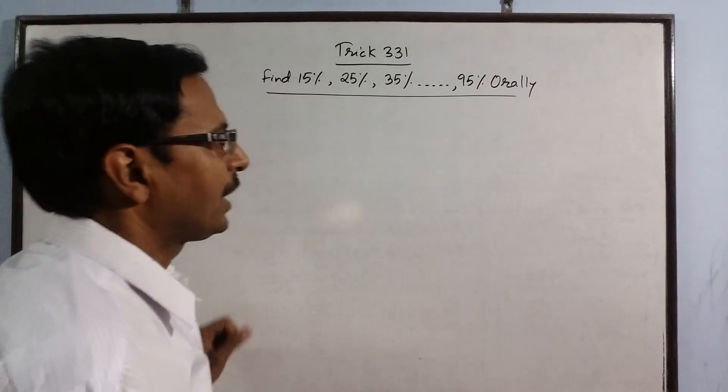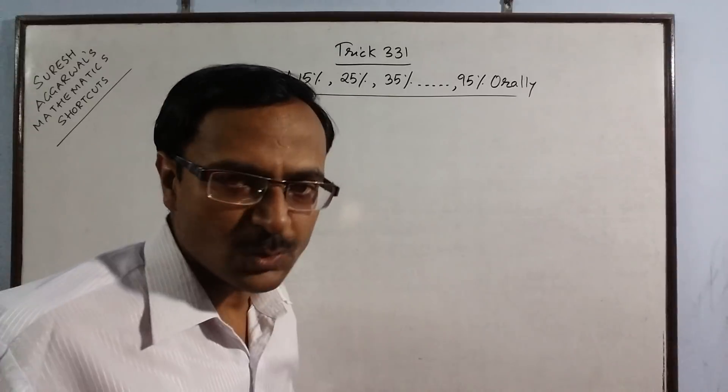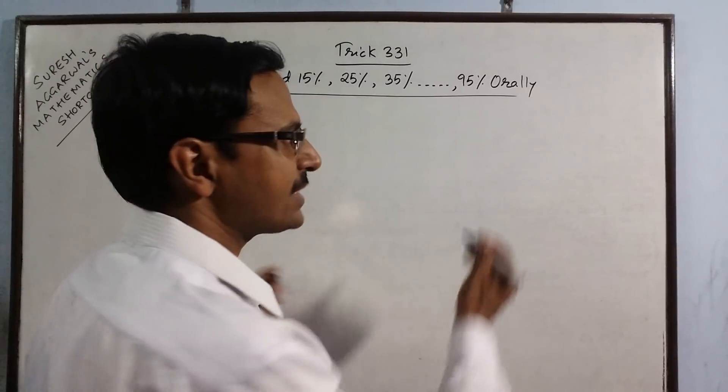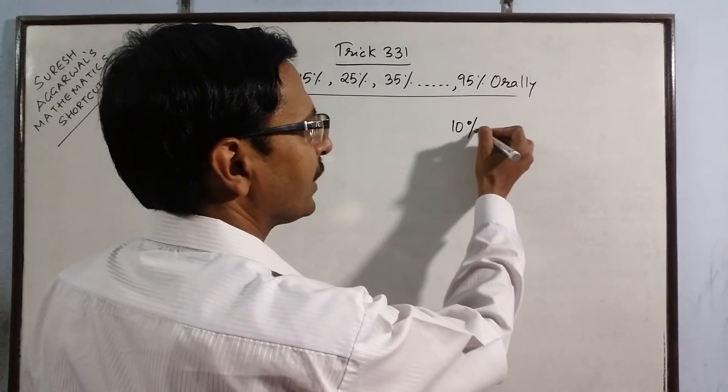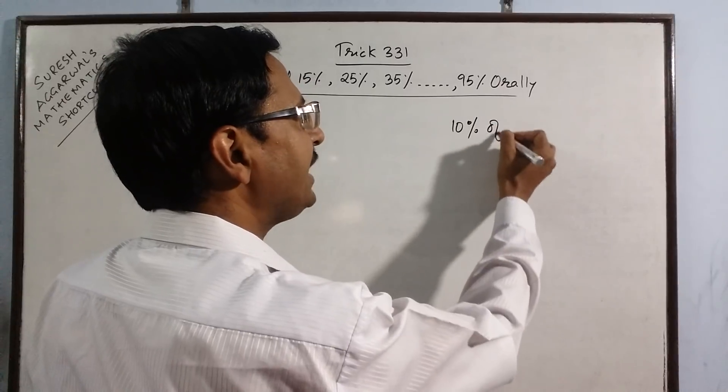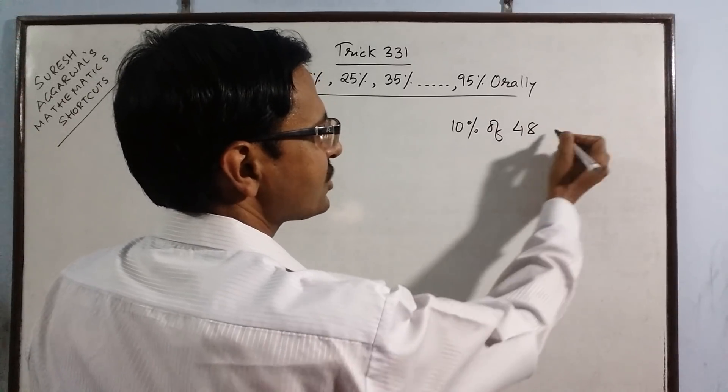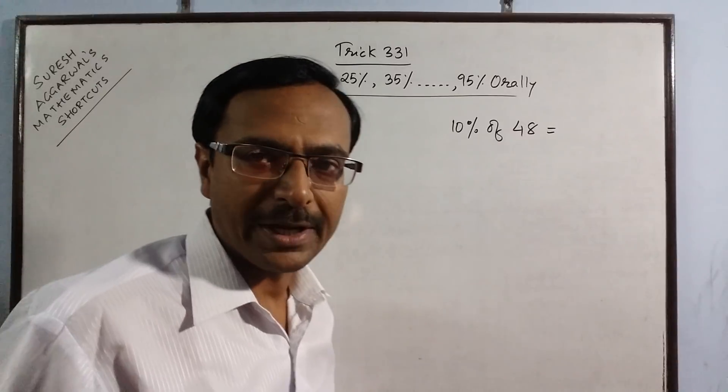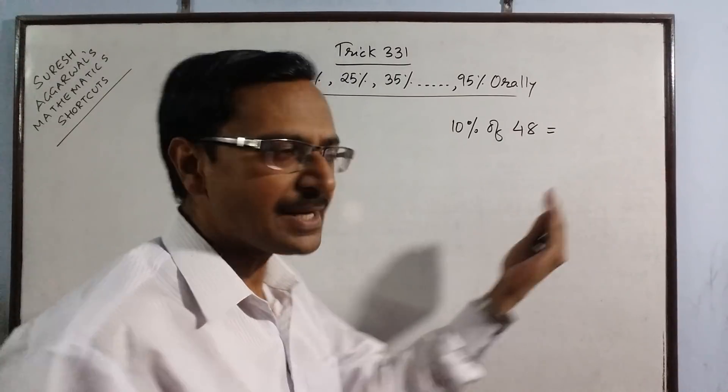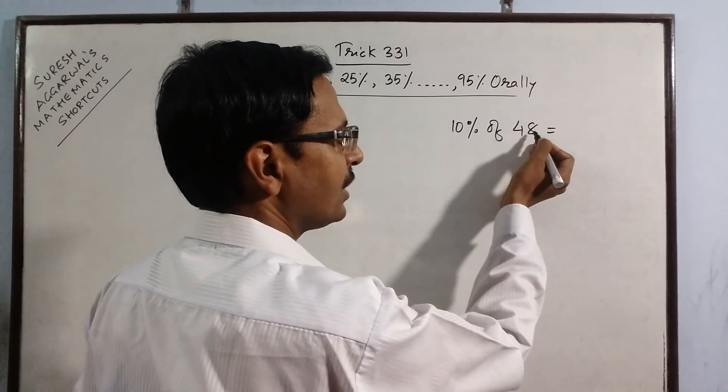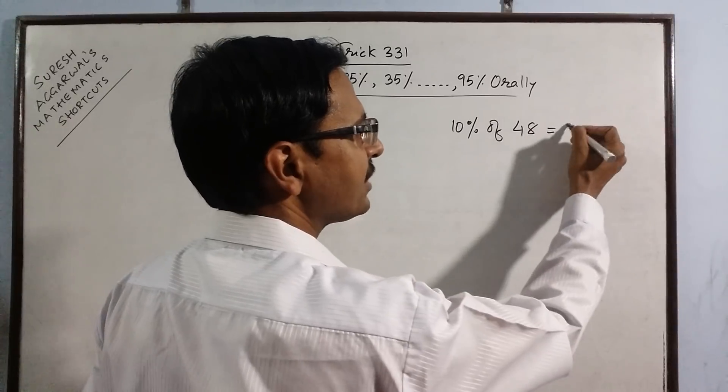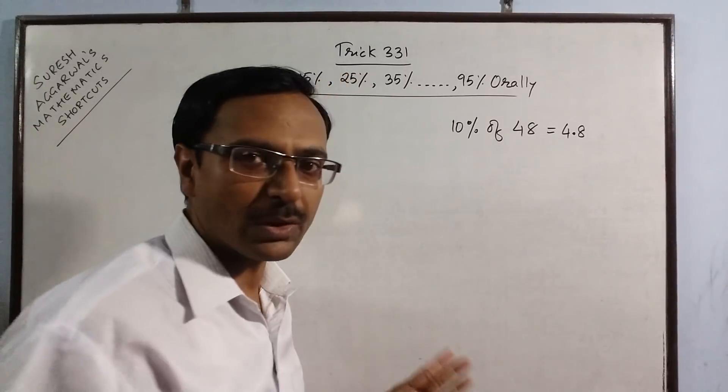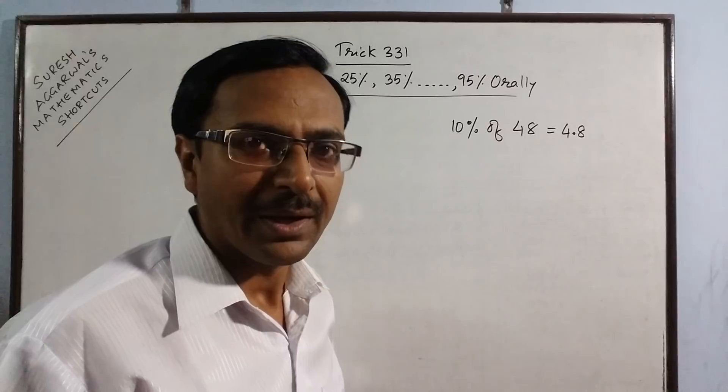For finding all these percentages orally you just need to understand what is 10% of a number. Basically 10% of any number, say 48, is just obtained by putting a decimal one digit from the right hand side. So if you put a decimal one digit from the right hand side it will become 4.8. This is what is called 10% of a number.